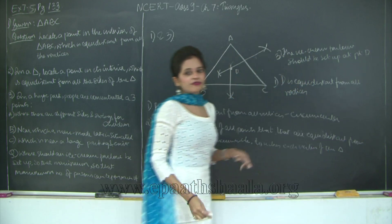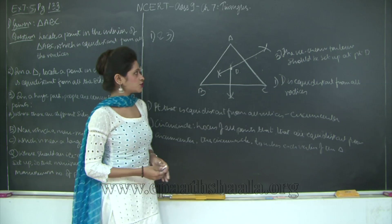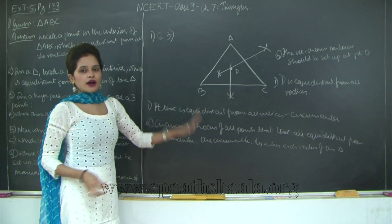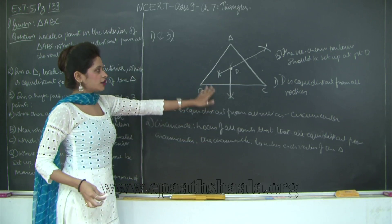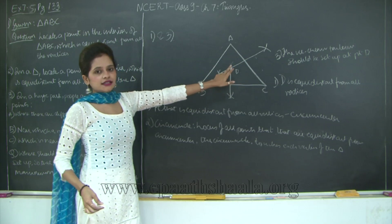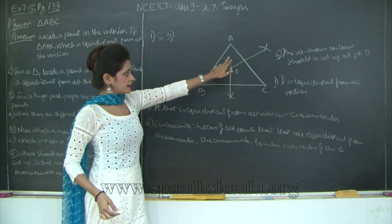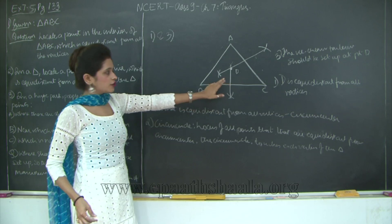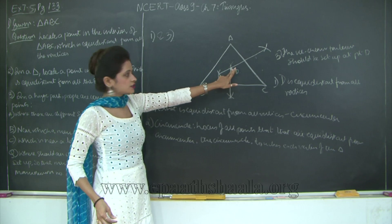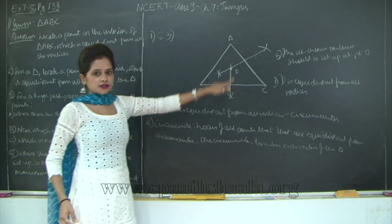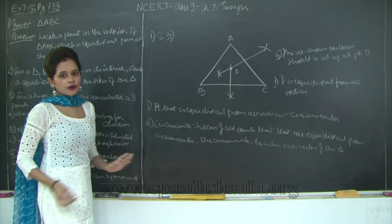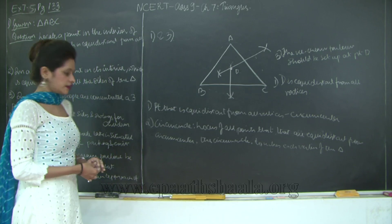So maximum number of people can approach when the ice cream parlor is situated at point D. You will notice that questions 1 and 3 are the same: you have to draw perpendicular bisectors of any two sides of your triangle, then find the point of intersection. This point of intersection is the circumcenter and it is also the answer for question numbers 1 and 3.